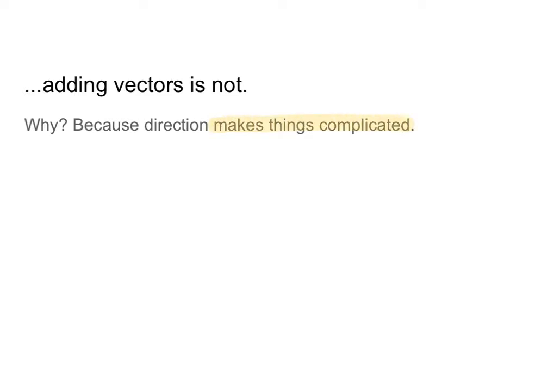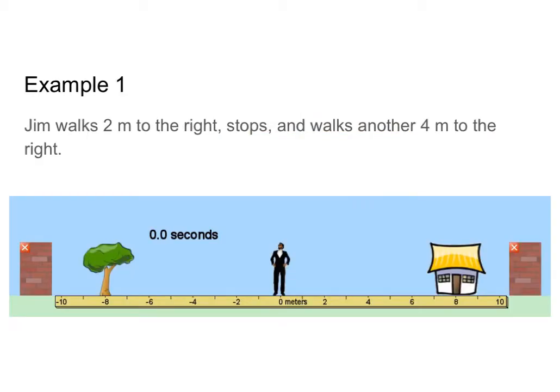So taking 2 steps forward and 2 steps back is going to be added differently than taking 2 steps forward and another 2 steps forward, which is going to be added differently than 2 steps forward and then 2 steps to the left. So we're going to be talking in this video about how we add vectors. And I'm going to start by talking about adding vectors in one dimension. So by that, I mean moving left or right and not up or down at all.